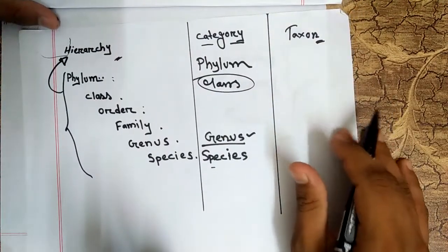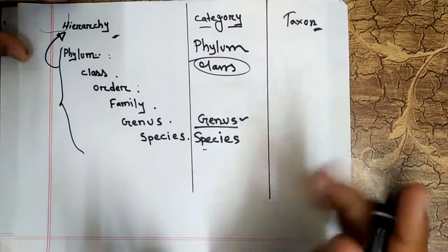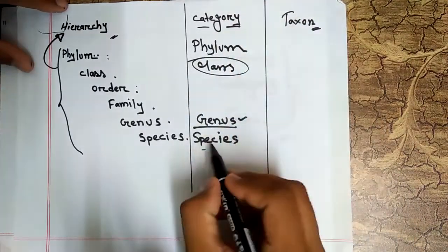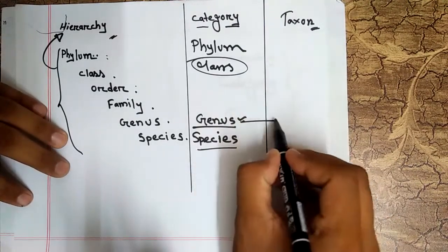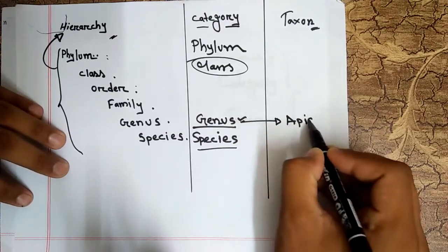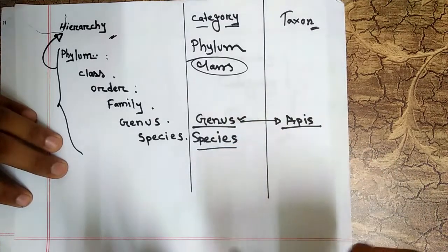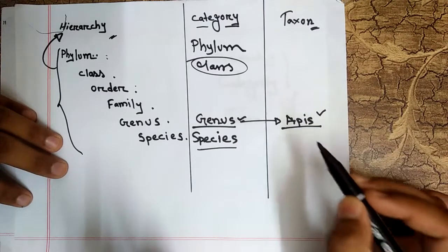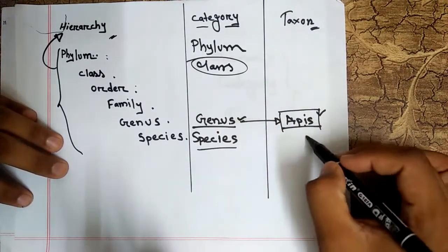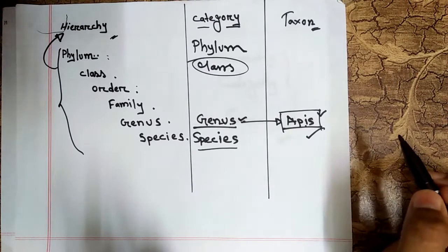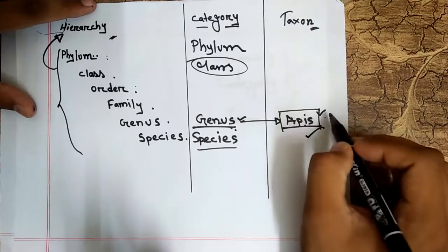Now, what is taxon? Taxon is an easy term, but we have to understand the difference between category and taxon. For example, there is a genus called Apis. Apis is a name of a genus, so Apis is a taxon under the category of genus. The examples of a category are called taxa. So the example of genus is a taxon.